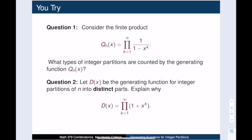This brings us to our 'you try' problem with two questions. Question one: what types of integer partitions are counted by the generating function qₙ(x)? Describe them in words. Question two: explain why the generating function for integer partitions of n into distinct parts is given by the infinite product D(x) = ∏ₖ₌₁^∞ (1 + xᵏ). Good luck and have fun!